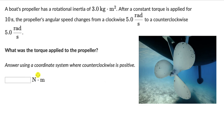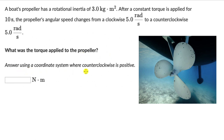Let's solve a question on angular impulse. Here we have a boat's propeller which has a rotational inertia of 3 kgm². After a constant torque is applied for 10 seconds, the propeller's angular speed changes from a clockwise 5 radians per second to a counterclockwise 5 radians per second. What was the torque applied to the propeller? We need to answer using a coordinate system where the counterclockwise direction is positive.